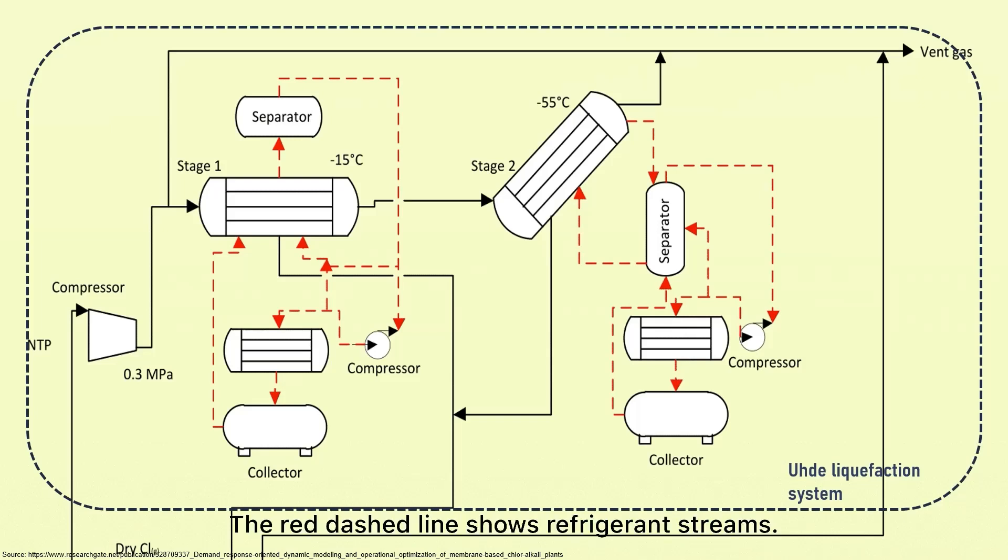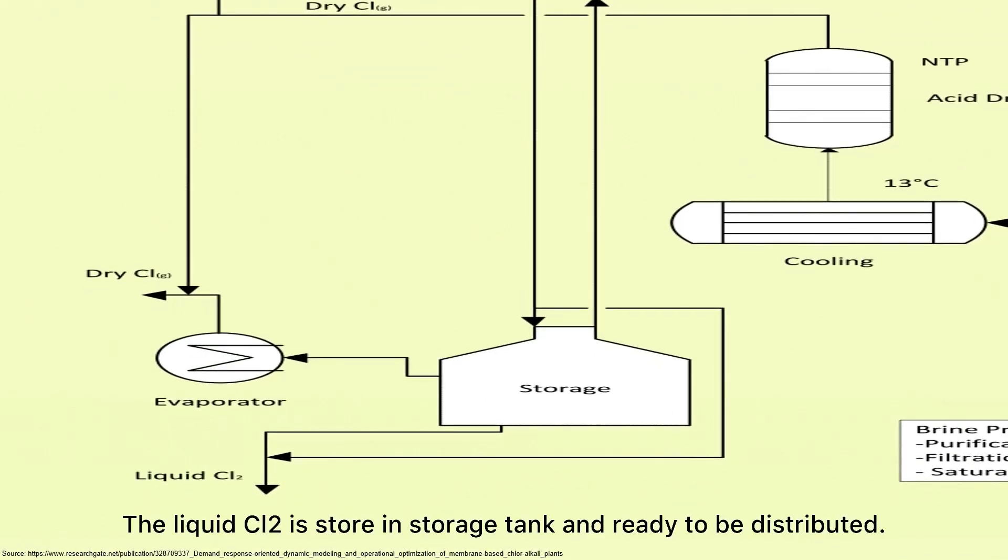The red dash lines show the refrigerant streams. The liquid Cl2 is stored in storage tank and ready to be distributed.